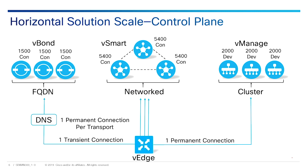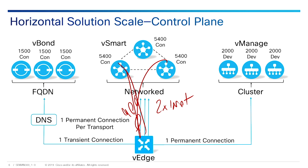Here are some scaling numbers for the control plane, starting from the vEdge. Each vEdge has one non-permanent connection to vBond, one permanent connection to vManage, and one permanent connection per transport network to vSmart. This is only the control plane — vEdge routers also have data plane tunnels. So if you have three transports, say MPLS and two internet, you've got six connections to vSmart, because we have two vSmart and you're connecting to both on each transport.